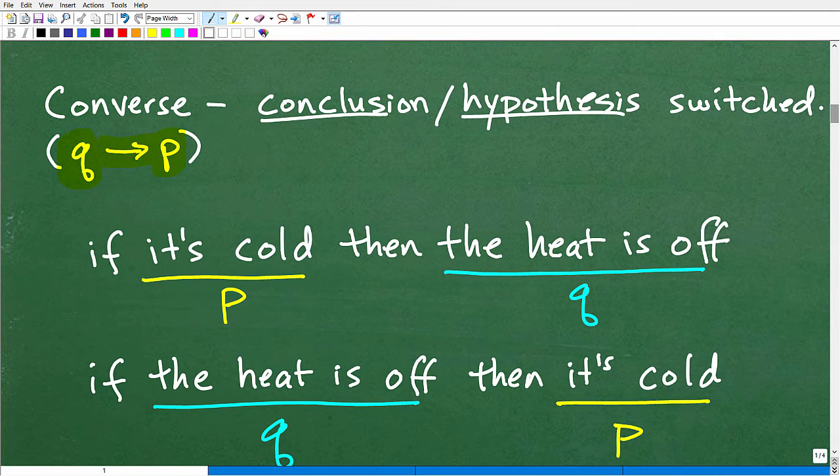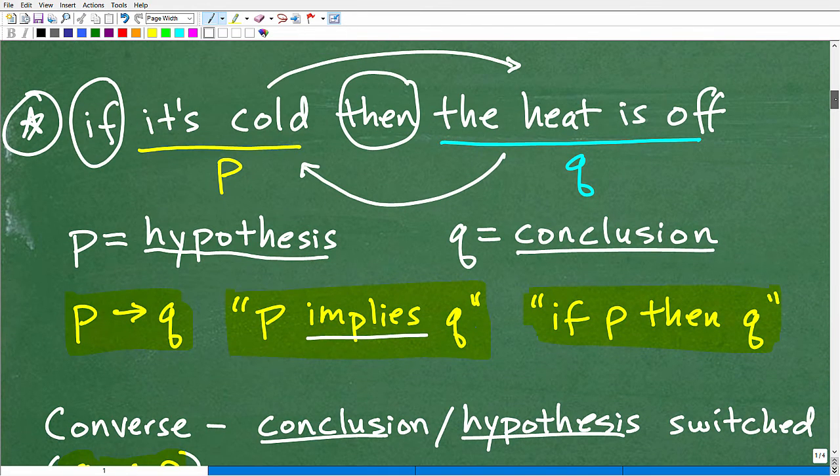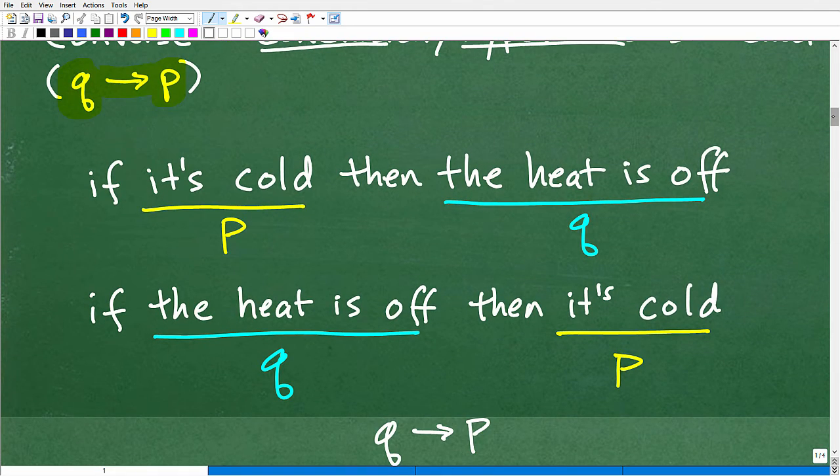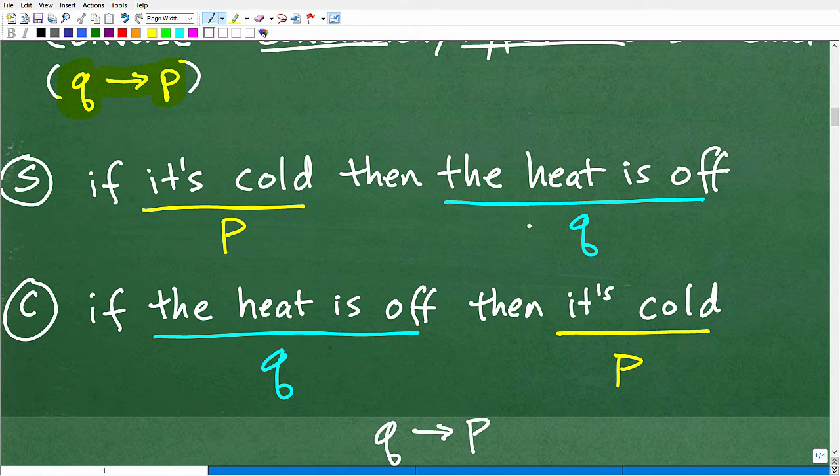And that would look like this. So if it's cold. Hold on here. I might be confusing. Oh, look, see here? I already set this up. This is the original statement. And this is the converse. If it's cold, then the heat is off. So here's P and here's Q. Now let's switch them. We're going to put this where the hypothesis is. We're going to put the conclusion where the hypothesis is. And we're going to put the hypothesis where the conclusion's at. And then kind of see what this statement says. So it says if the heat is off, then it's cold. So this is the converse right here.